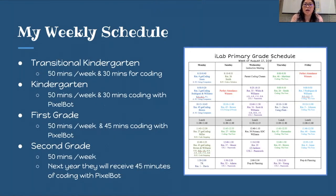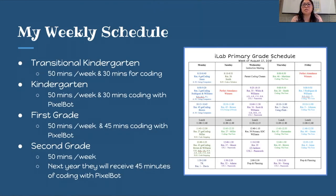The Hour of Code should not just be one week of the year — at our school we code throughout the year. I see about 18 classes a week. For transitional kindergarten I see them 50 minutes, plus an additional 30 minutes just for coding. Kindergarten also gets 50 minutes, with an additional 30 minutes using Pixel Bots. First grade has 50 minutes with 45 minutes of coding using Pixel Bots, and second grade has 50 minutes a week and will also receive 45 minutes of coding with Pixel Bots next year.